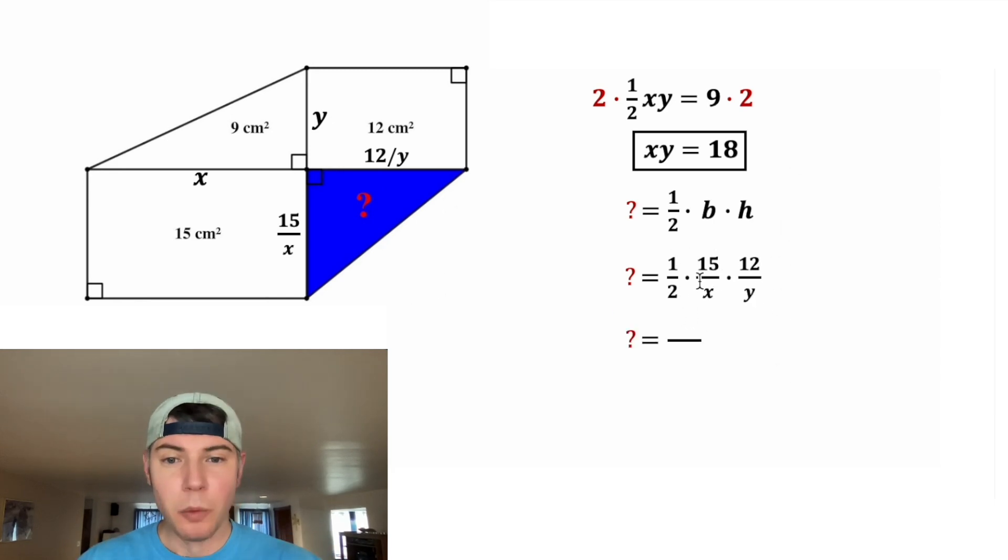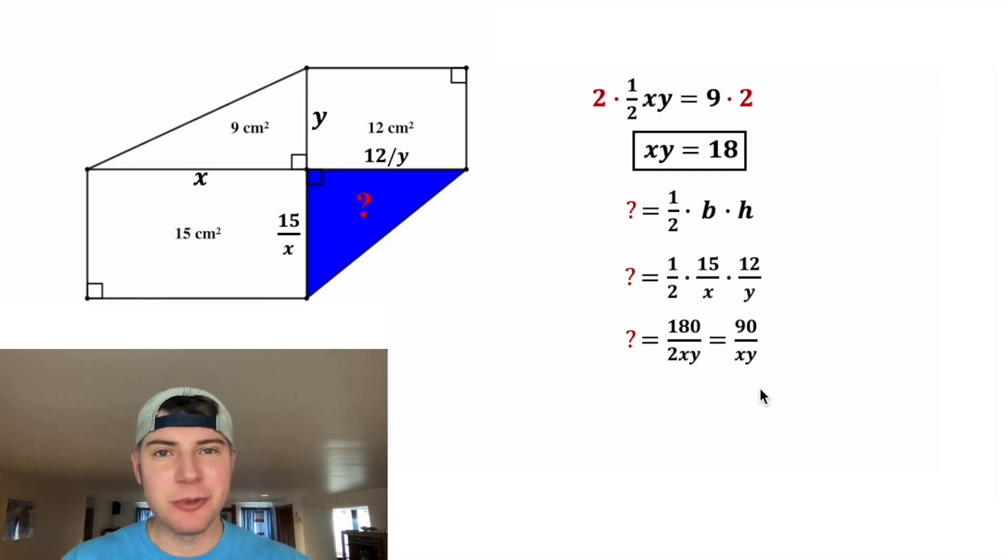And now we're just multiplying fractions. 1 times 15 times 12 is equal to 180, and 2 times X times Y is equal to 2XY. And we can simplify this. 180 divided by 2 is equal to 90, and then we still have the XY. Earlier, we figured out that X times Y was equal to 18, so I'm going to change this into an 18.